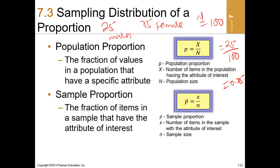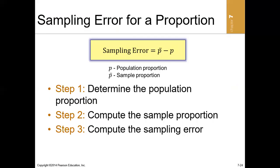Now, sampling error of a proportion. Remember that sampling error is the difference between a measure computed for a sample and the corresponding measure computed for a population. So the sampling error for a proportion is the sample proportion minus the population proportion. This is analogous to the sampling error of a mean, which was sample mean minus population mean.